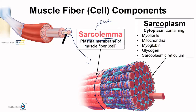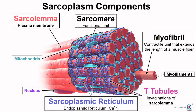Myofibrils make up the bulk of the sarcoplasm and are the contractile unit, but also maintain the structural integrity of the fiber. Myoglobin is an oxygen-bonding protein, important for oxygen transport. It's also pigmented, so it gives muscle its color. And glycogen allows for anaerobic respiration. Let's take a closer look at the structures in the sarcoplasm.